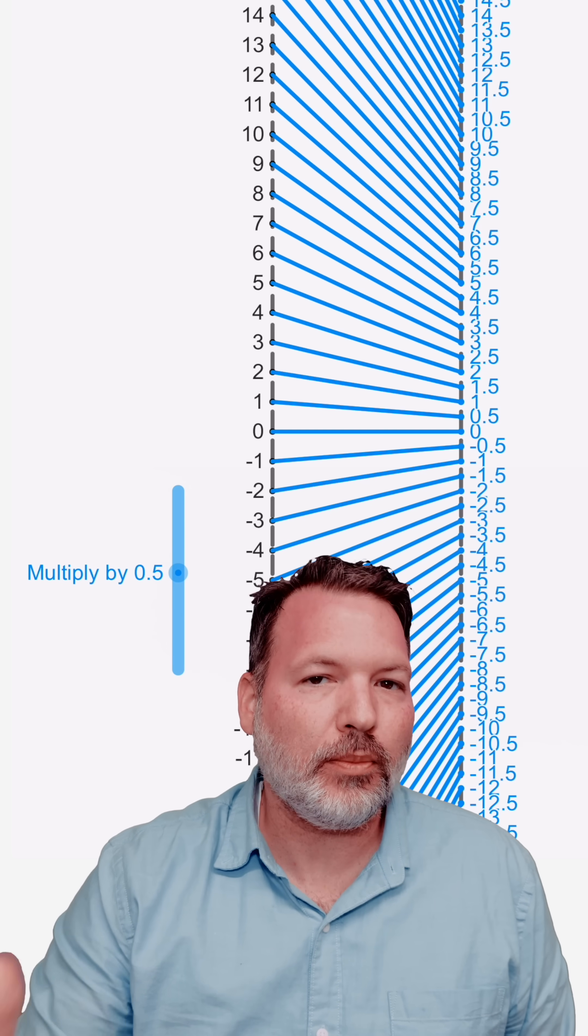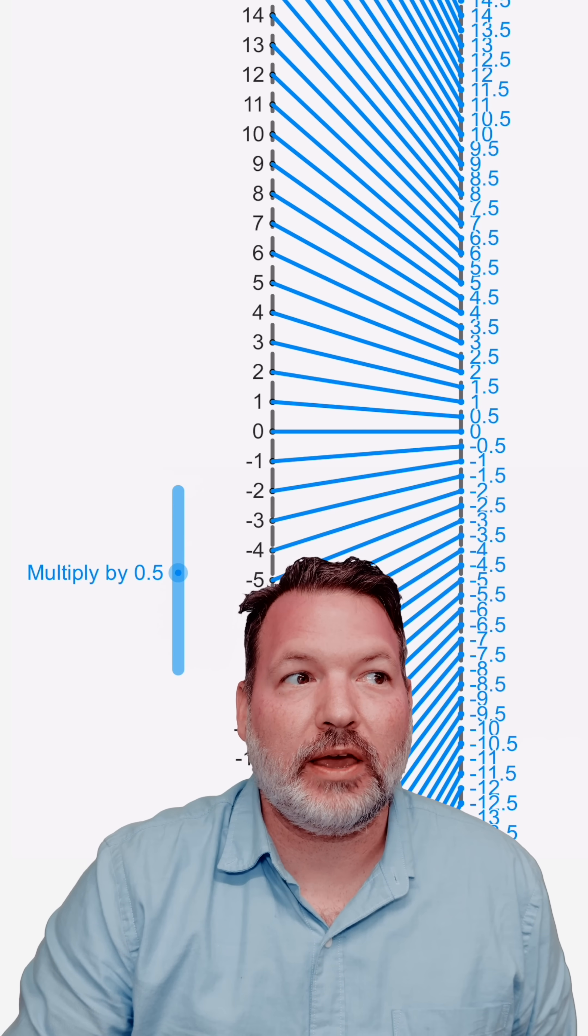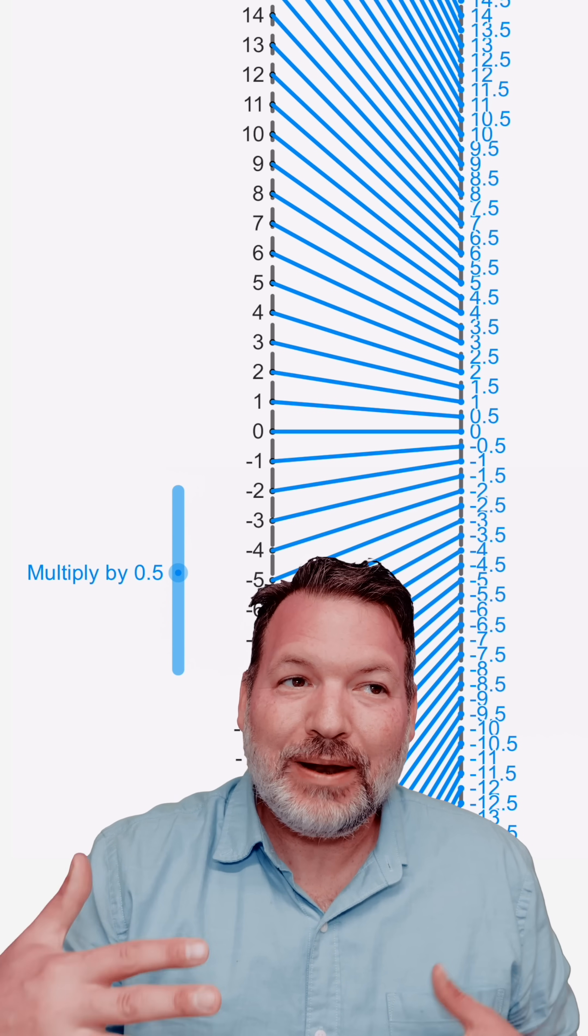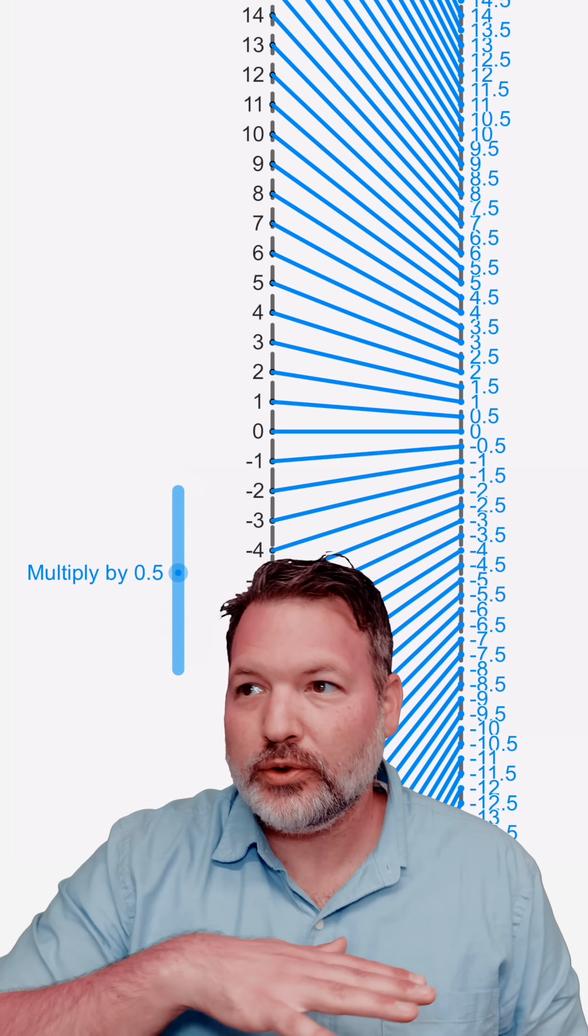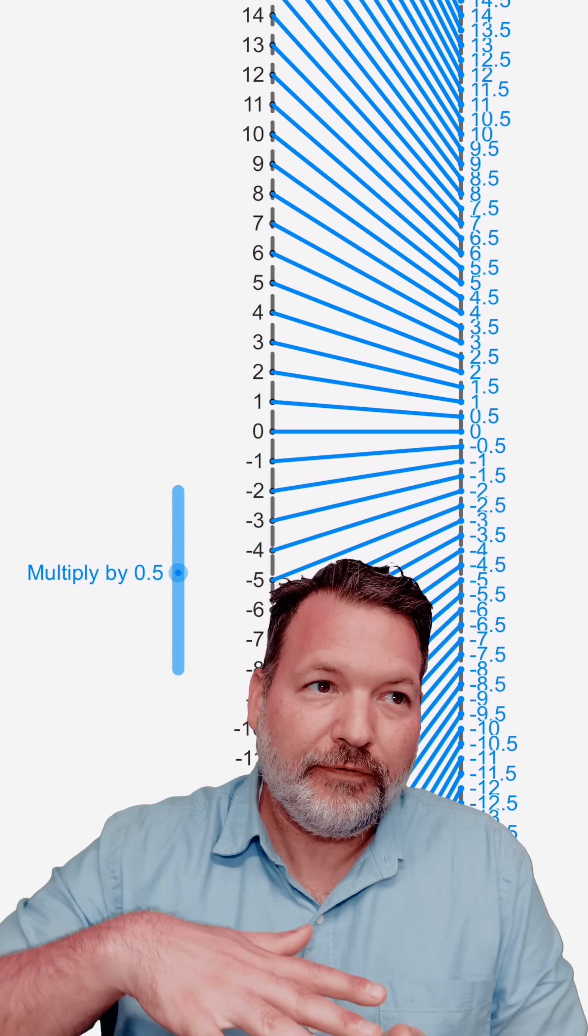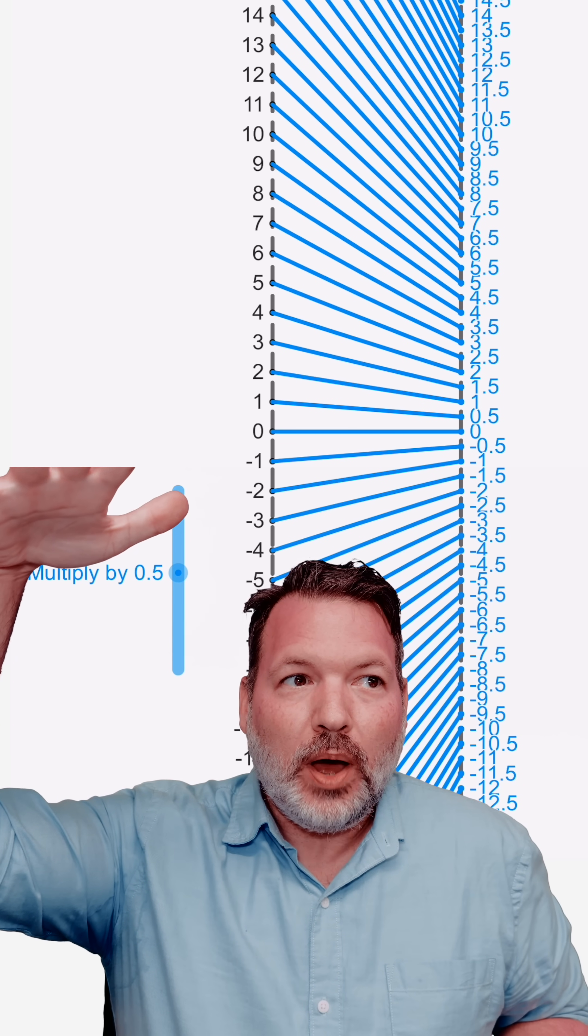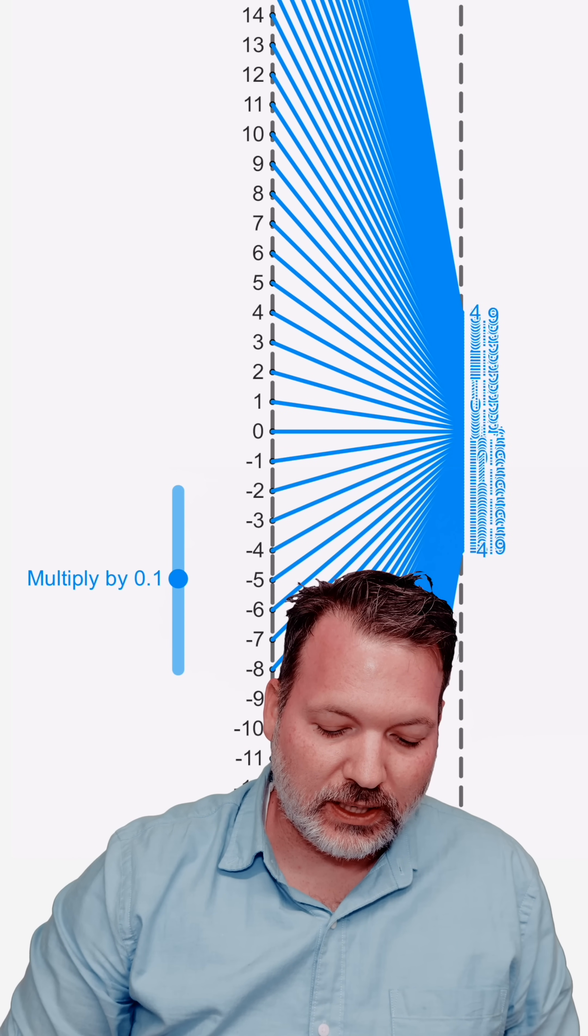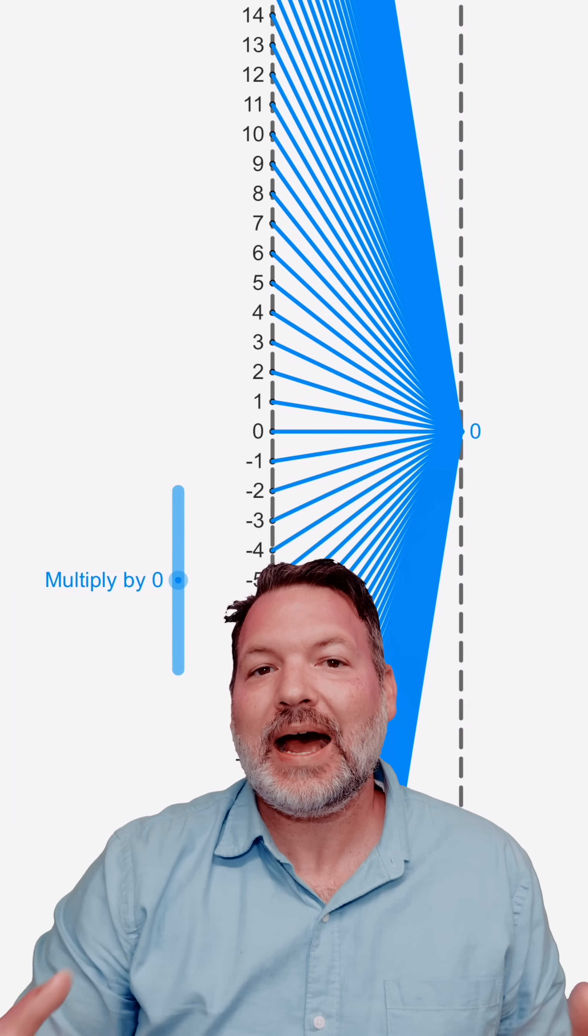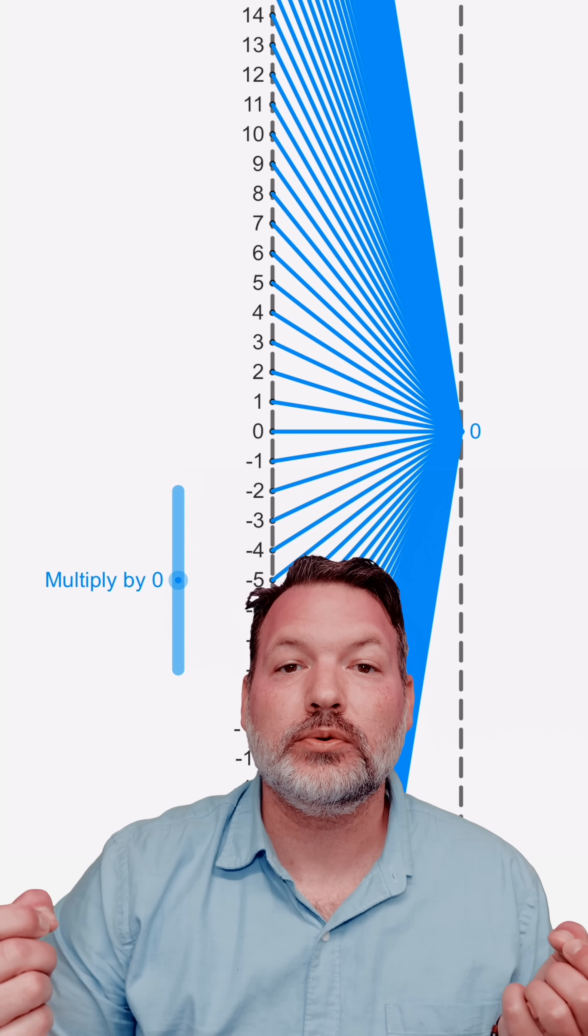But we can scale by even smaller factors than 1. We can scale by fractions or decimals. And when we do that, we start to compress the number line. Rather than have those scalings or mappings go further away from where they were before, we see them approaching a particular number. In fact, as we continue this process, we eventually see that the entire number line collapses down to 0.